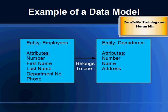Here is an example of a high-level data model in the context of database modeling. Two entities are required in the business process: employees and departments. Attributes required for employees are number, first name, last name, department number, and phone. Attributes required for departments are number, name, and address. Each employee can belong to one department only.